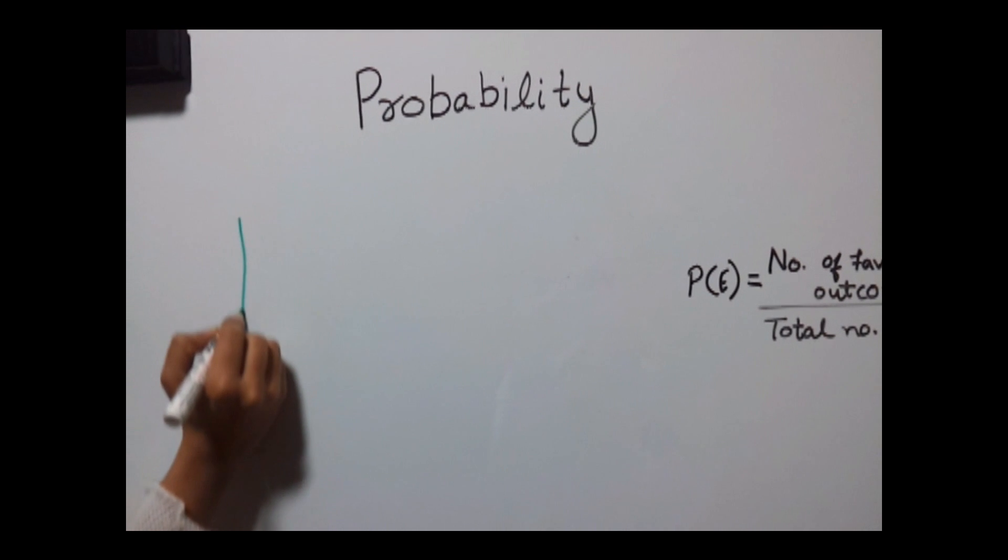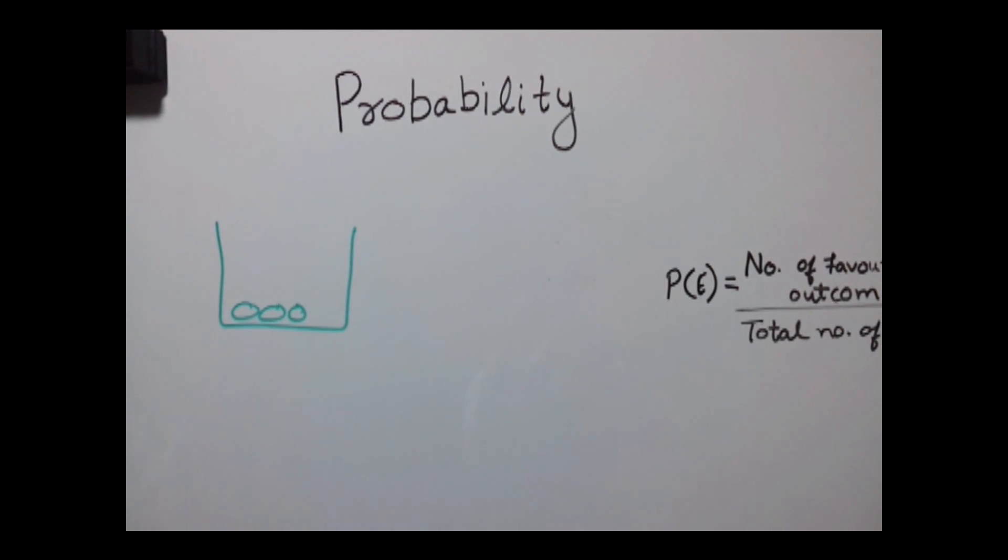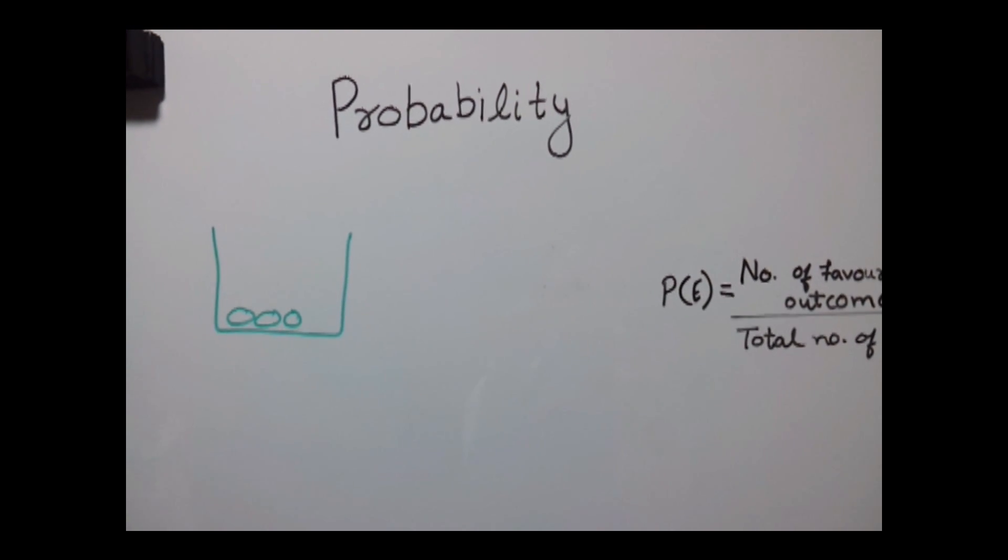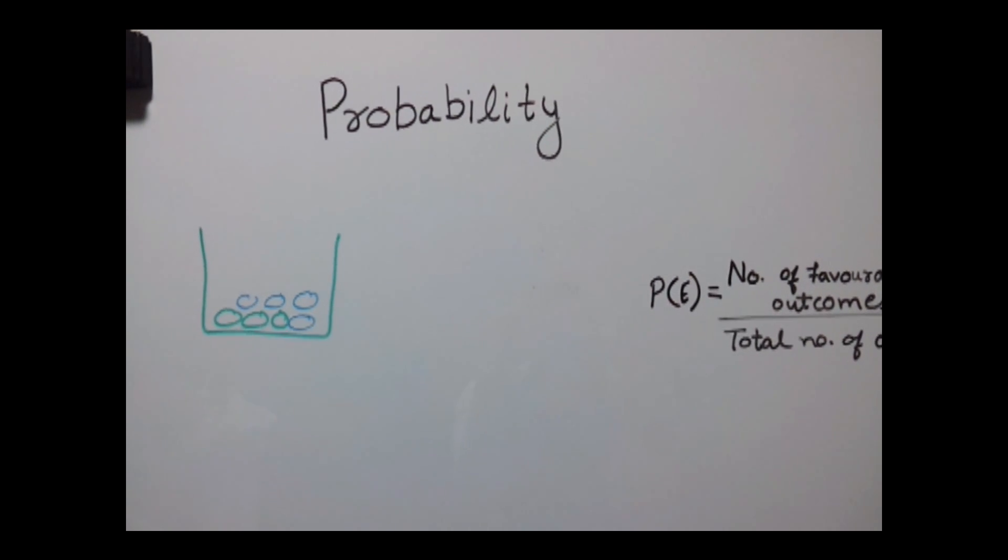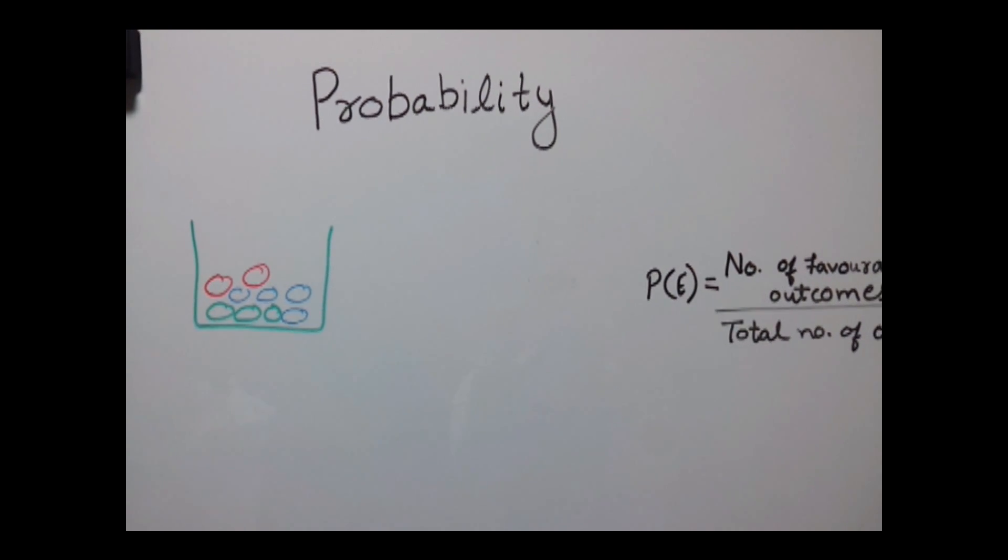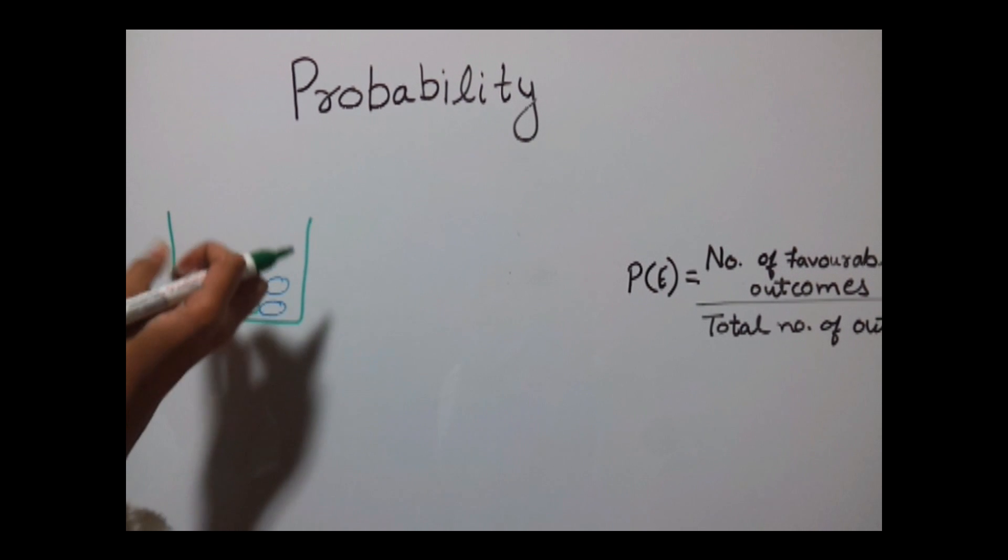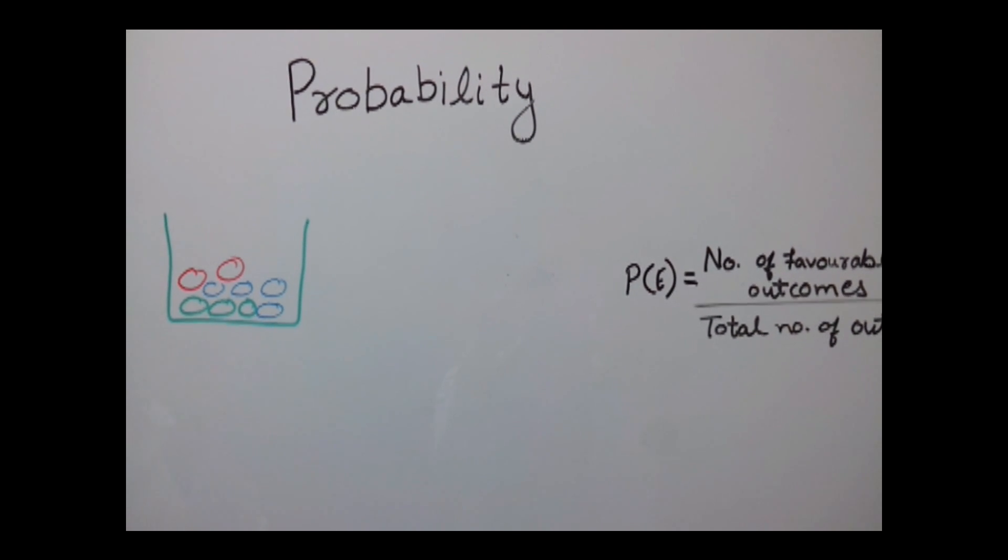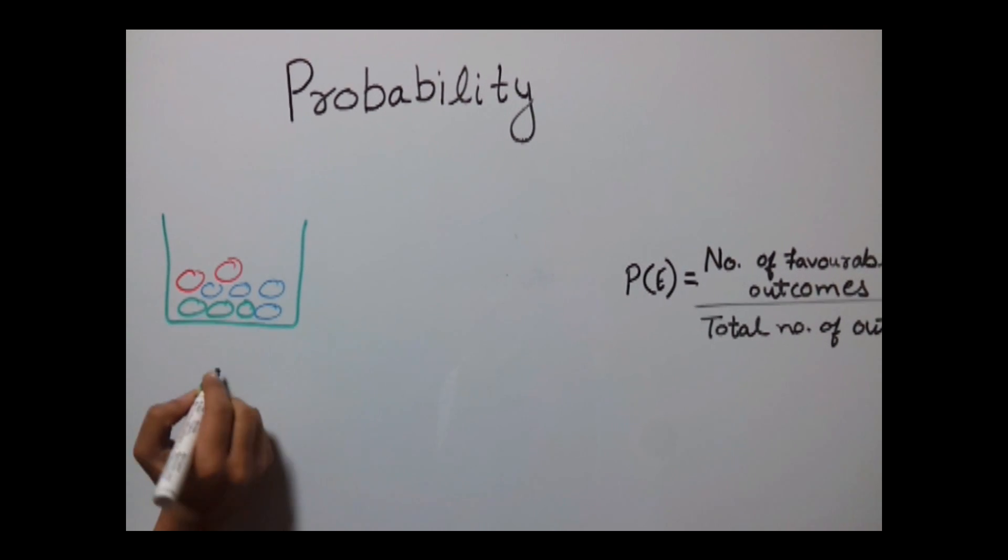Suppose there is a jar. There are three green balls and four blue balls, and then we are having two red balls over here. A girl randomly selects a ball from here and we need to find out the probability of that particular ball. What would be the probability of red color ball?